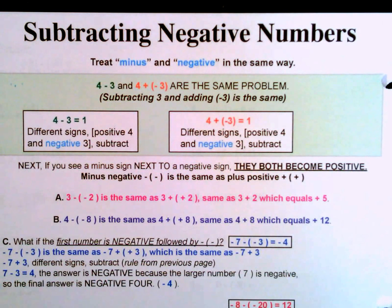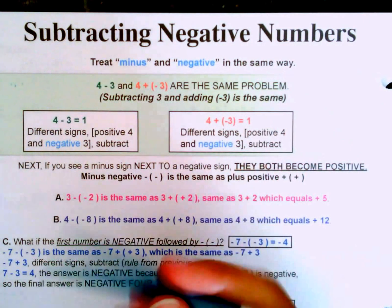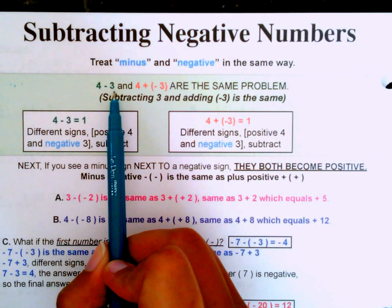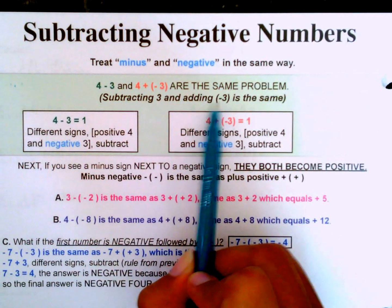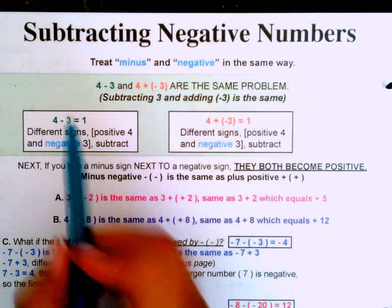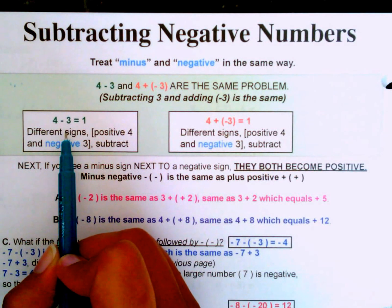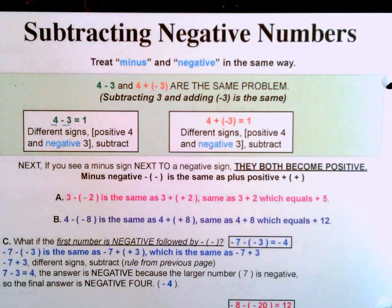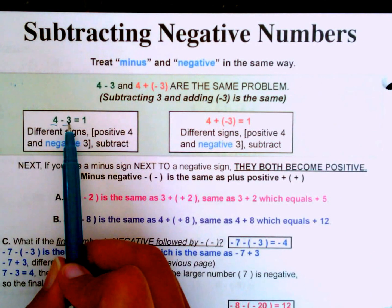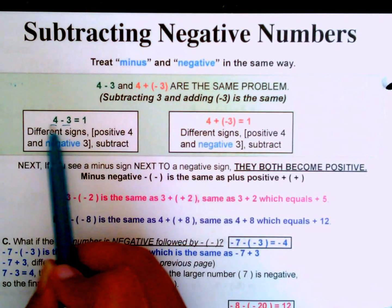Algebra is easy, part one, page six: subtracting negative numbers. First things first, we're going to be treating minus and negative in the same way. So four minus three and four plus negative three are the same problem — subtracting three and adding negative three is the same thing. Applying our previous rule: same sign add, different signs subtract. Here we have a four and a negative three — different signs — so we subtract: four minus three is one.